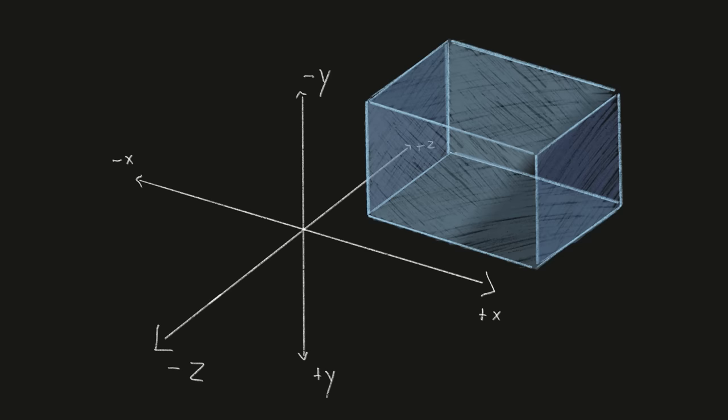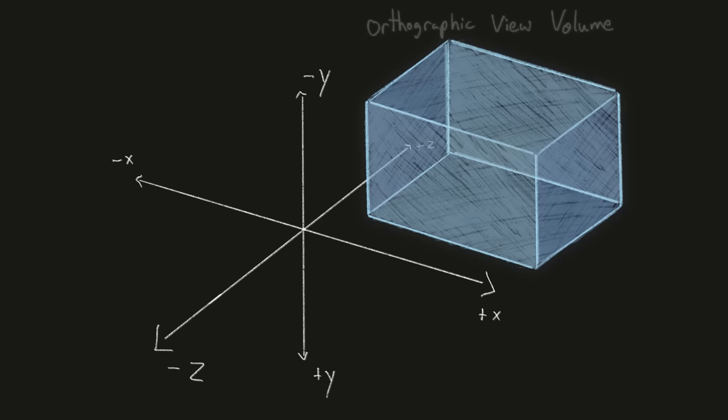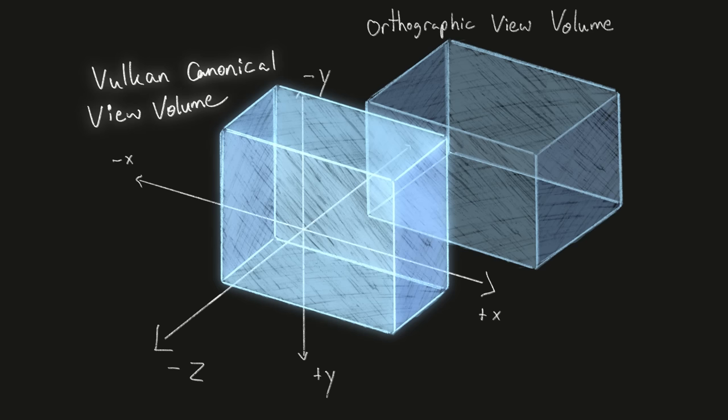So these 6 values, left, bottom, near, and right, top, far, define the orthographic viewing volume. So to construct an orthographic projection matrix, we need to solve the following problem. How do you transform the orthographic view volume to Vulkan's canonical view volume? And the good news is, we already know how to do this.